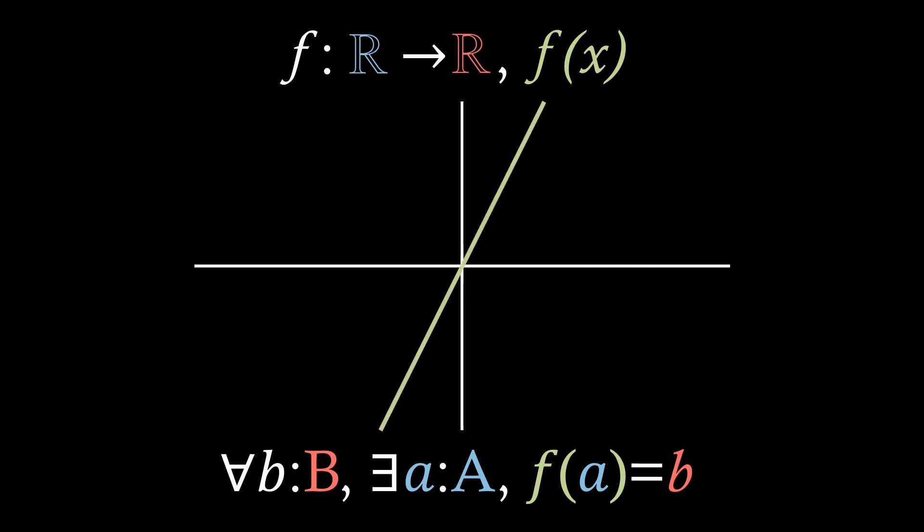Now, what would a surjective function look like? If we take, for example, f of x equals 3x, which we know is surjective, because if we take any value little b in our codomain, we can find a little a, i.e. little b divided by 3, which the function rule will map to b.